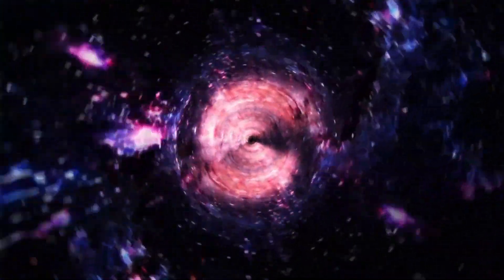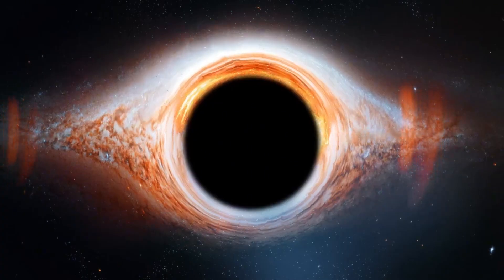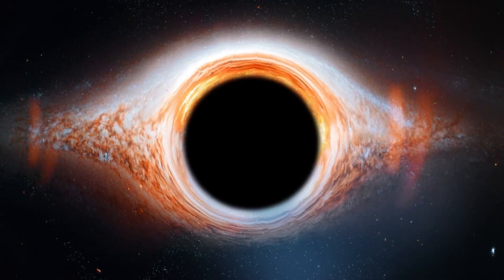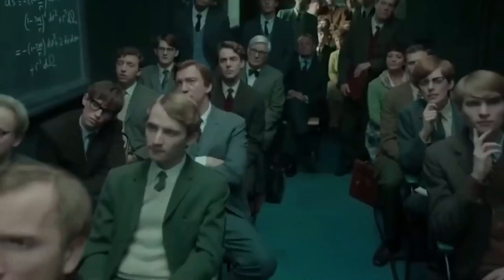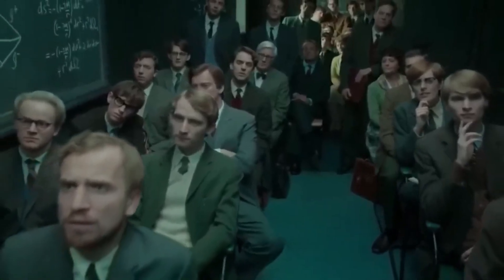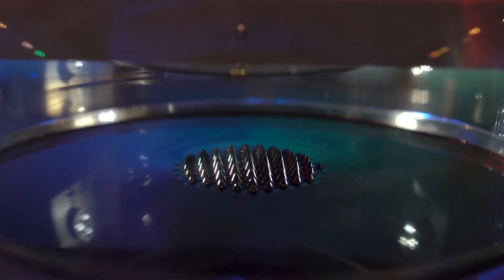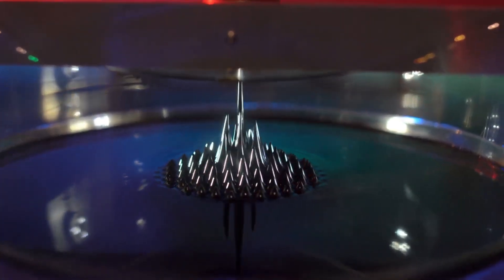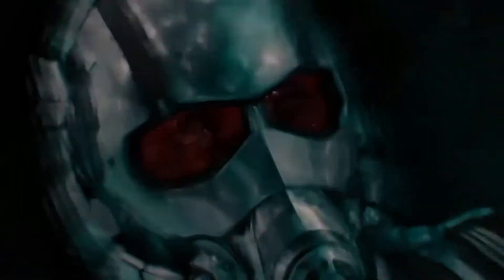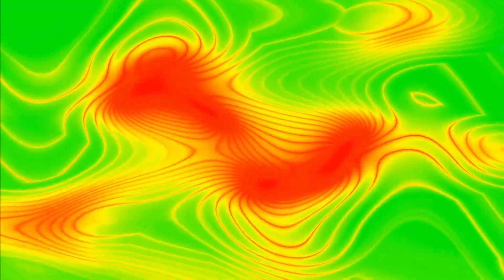Stephen Hawking proposed that black holes slowly evaporate over time, emitting radiation. If a previous universe existed, some of its black holes might have survived and could still be present in our universe today. These ancient black holes could carry information from a past cosmos, hidden within their event horizons. Gravitational waves are ripples in space-time caused by massive cosmic events. Some physicists believe that certain gravitational waves could be echoes from before the Big Bang, carrying traces of a previous universe's collapse.